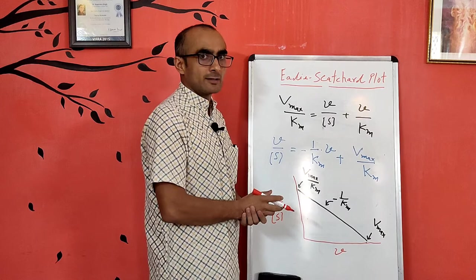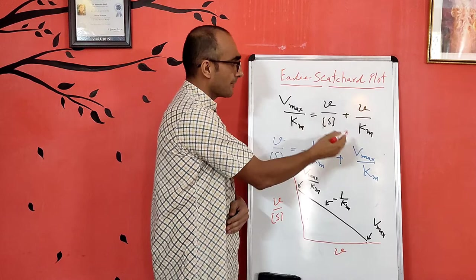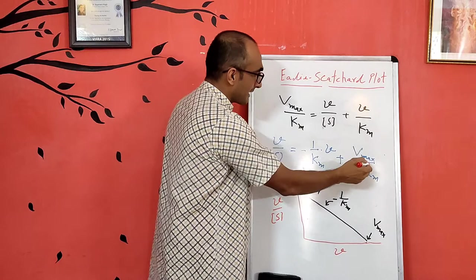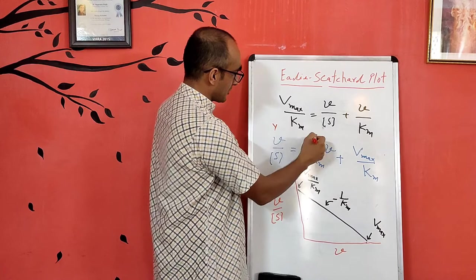By rearranging, v/S can be taken to the other side, giving: v/S = (−1/Km)·v + Vmax/Km. This equation follows the form of a straight line, y = mx + c.